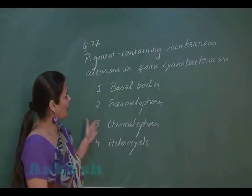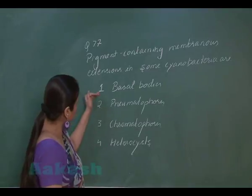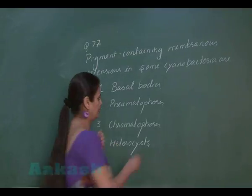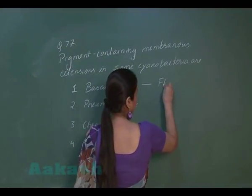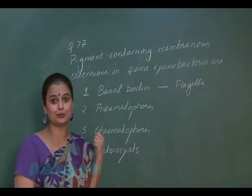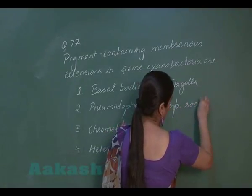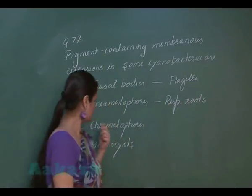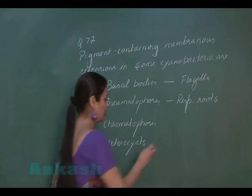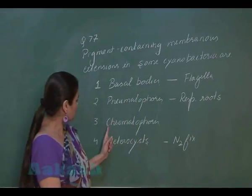In question number 77, we have to find the option which represents a pigment-containing structure. The first option, basal bodies, are structures which form flagella. Nematophores are respiratory roots present in mangrove plants — they are aerophores. Heterocysts are structures present in cyanobacteria involved in nitrogen fixation.